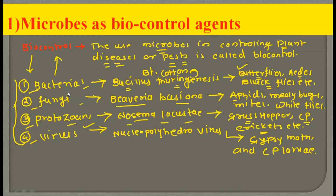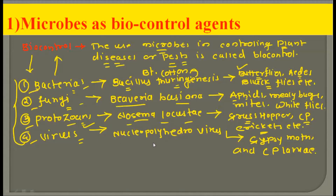We have seen one example for each category. In bacteria we have Bacillus thuringiensis; in fungi we have Beauveria bassiana; in protozoa we have Nosema locustae; and in virus we have Nucleopolyhedrovirus. We have discussed the host range of each one.